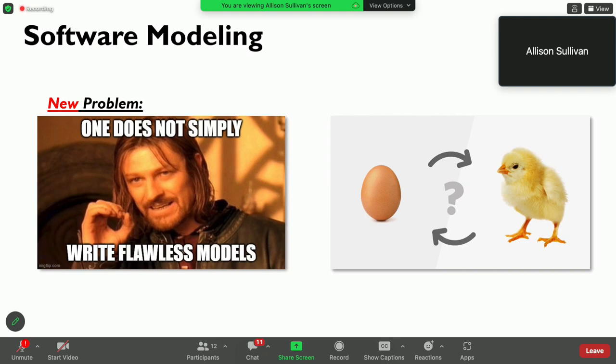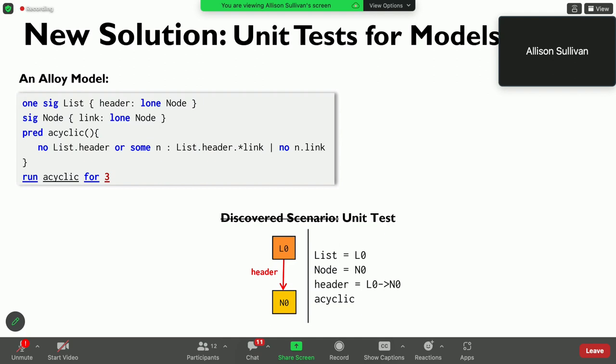My research looked into the idea of addressing model correctness the same way that we do for simple blocks of code, which was the idea of establishing a unit test for a software model. So, for our singly linked list example, an idea of a unit test that we came up with was to basically allow the user to specify one of those expected scenarios that should be found when the model is executed.